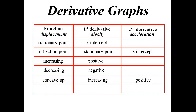If it's decreasing, the velocity graph will be below the axis. If the displacement graph is concave up, the second derivative is positive, so the first derivative must be increasing — and the acceleration will be above the axis. When it's concave down, the opposite happens: decreasing velocity and negative acceleration.